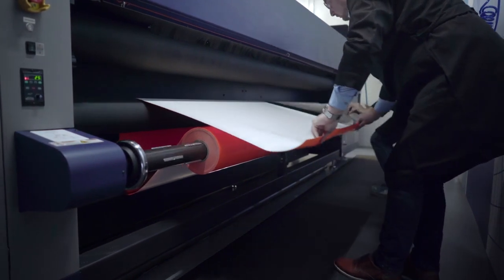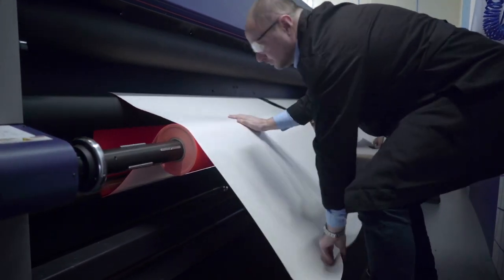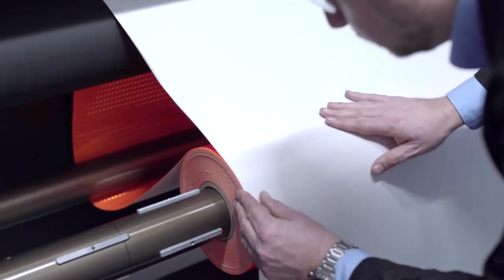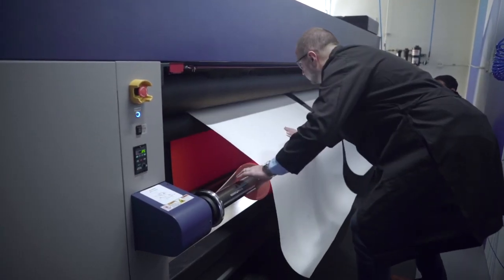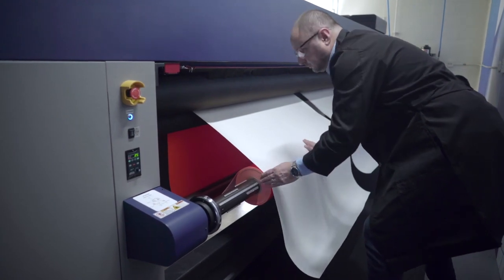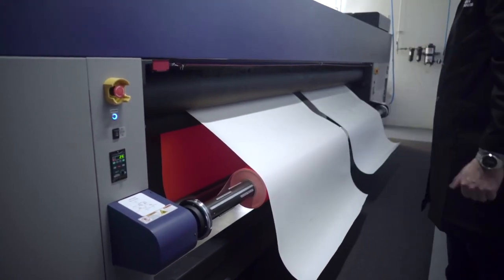They will then feed the material through the nip roller and line it up to ensure it will feed straight through the printer. Once the material is lined up, they will engage the nip roller that runs the length of the printer to hold the material in place so that they can feed it through the rest of the printer.